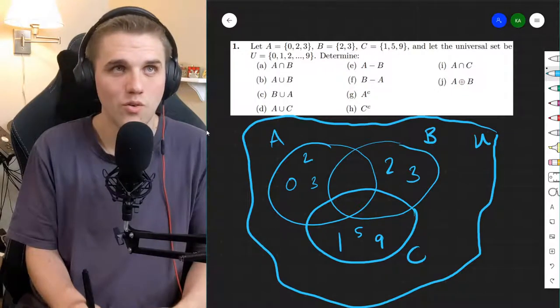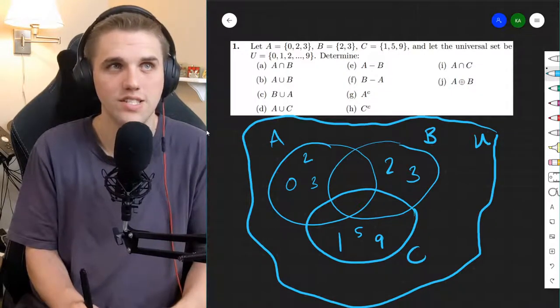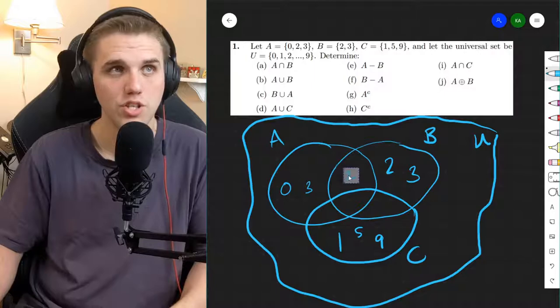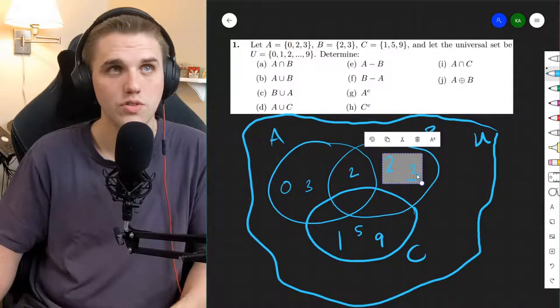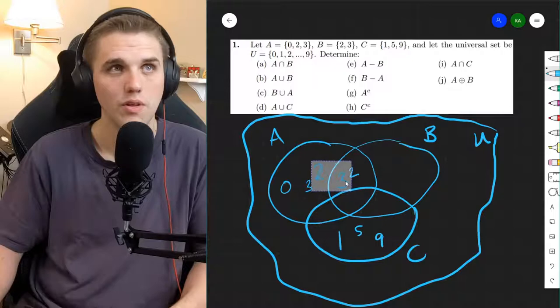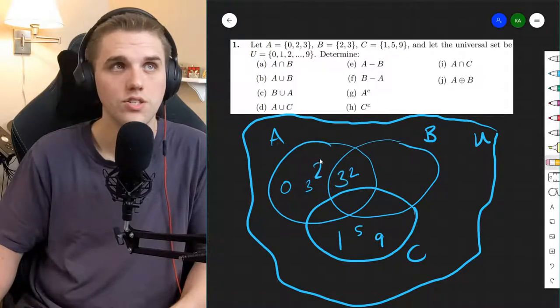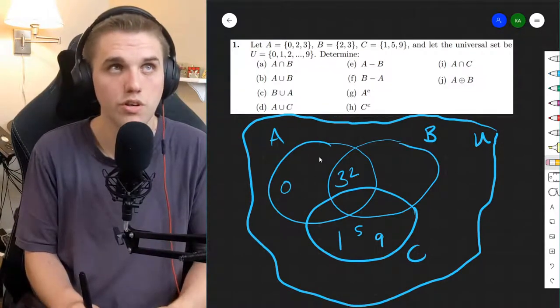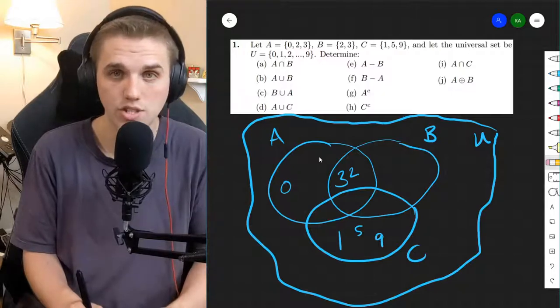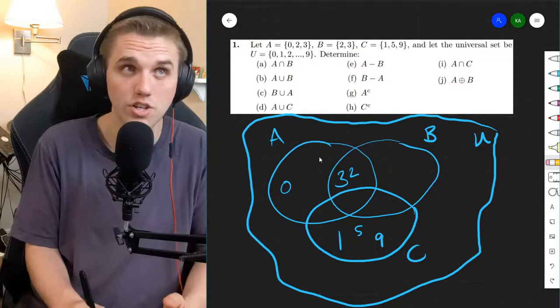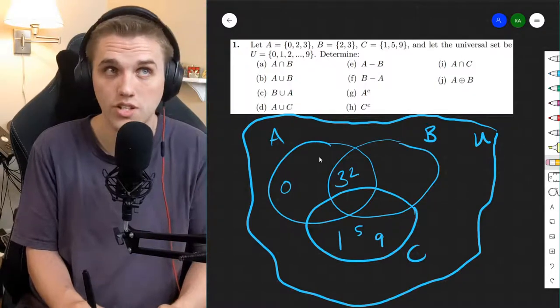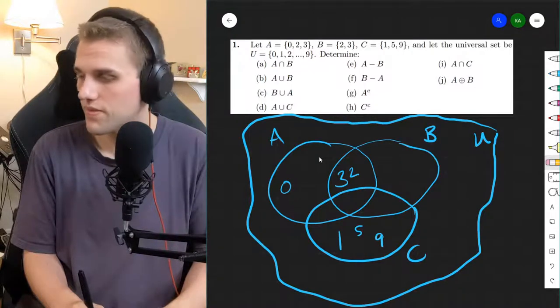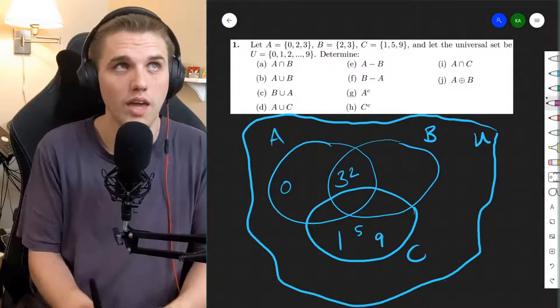Now, what you can then do is relate these three sets and move these elements to their proper location. So for example, this 2 should be in the middle, and this 3 should be in the middle, and I need to erase this 2 and this 3 so that you can clearly see that A and B both share the elements 2 and 3. There's still an A and B. In A, there's still 0, 3, and 2, and in B, there's still that 3 and that 2. So everything's good still. But this makes it a lot easier when we answer these questions.